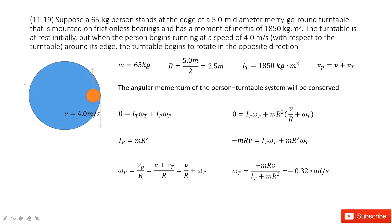We can see we have a merry-go-round turntable, and then a person. The mass is given, the radius of the merry-go-round is given, and the person just walks at the edge of this turntable. And then the moment of inertia for this turntable is given. Now we need to find the turntable's angular velocity as a final. So how can we do that?